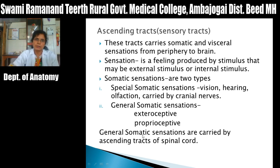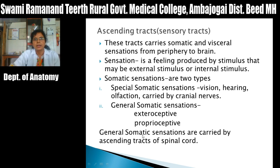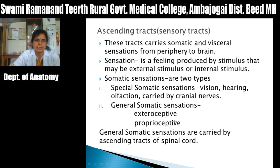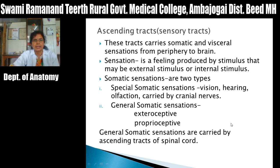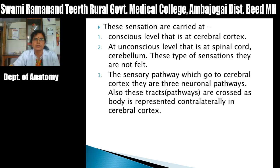There is also a third variety of sensation called interoceptive or visceroseptive sensation, generated in the wall of the viscera. General somatic sensations — that is exteroceptive and proprioceptive sensations — are carried by the ascending tracts of the spinal cord.